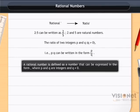A rational number is defined as a number that can be expressed in the form p by q, where p and q are integers and q is not equal to 0. Thus, 3 by 7 is a rational number where p and q are the integers 3 and 7 respectively.